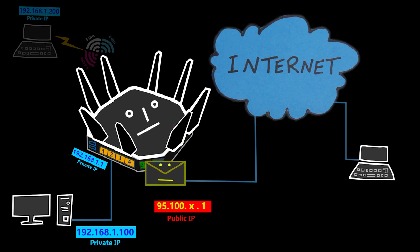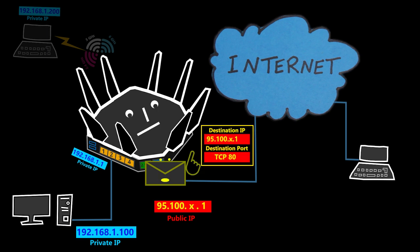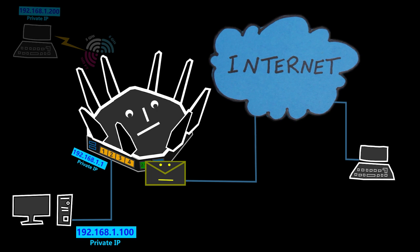In the demonstration, a packet tries to reach the web server using the router's public IP address on port TCP 80, but the router responds that while that IP address belongs to it, it is not offering any service on port TCP 80.